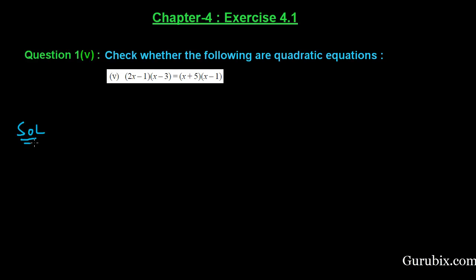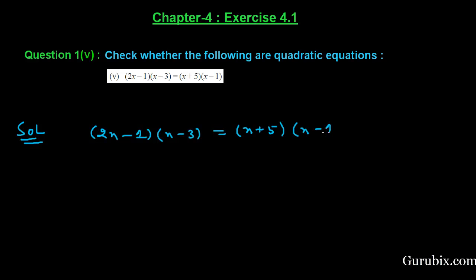First of all, we shall write the given equation: (2x - 1)(x - 3) = (x + 5)(x - 1). We shall multiply these two binomials. If we multiply 2x with (x - 3), then we have 2x(x - 3).